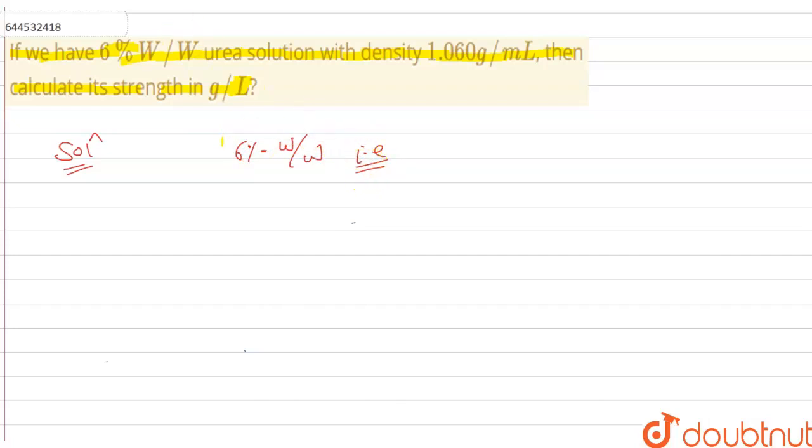means 6 gram of urea present in 100 gram of solution.